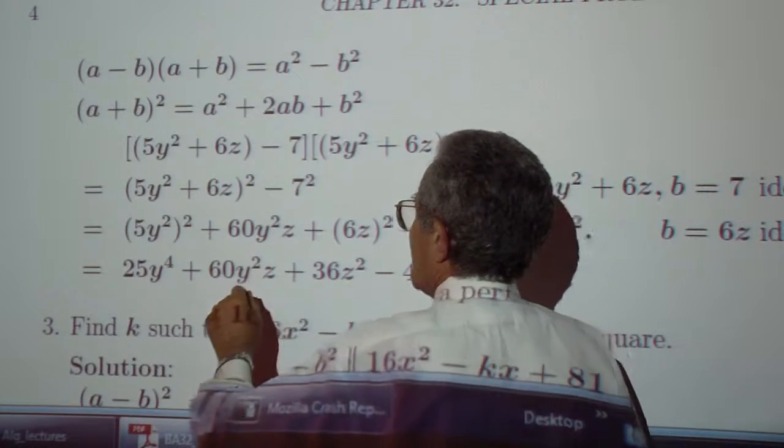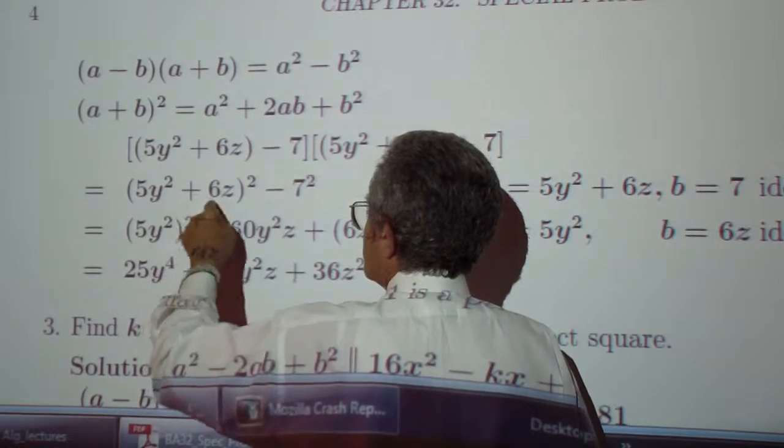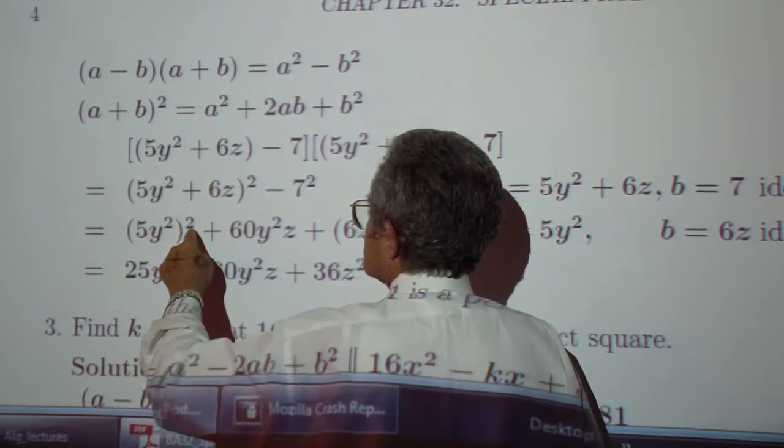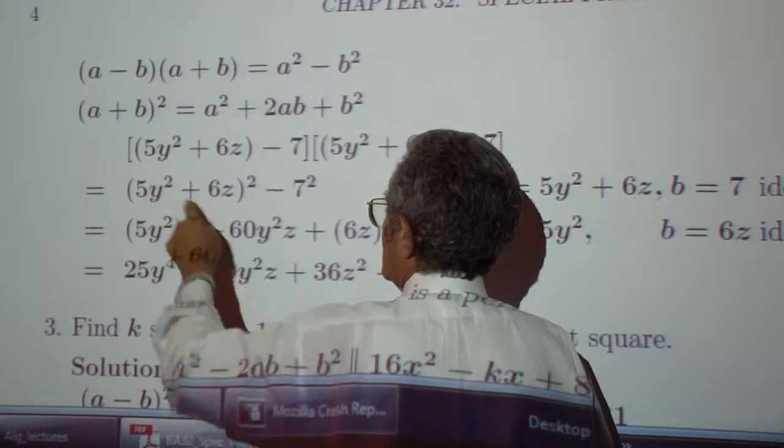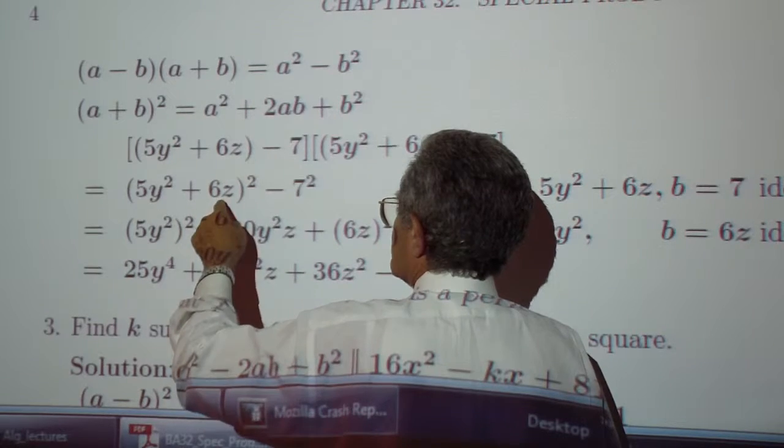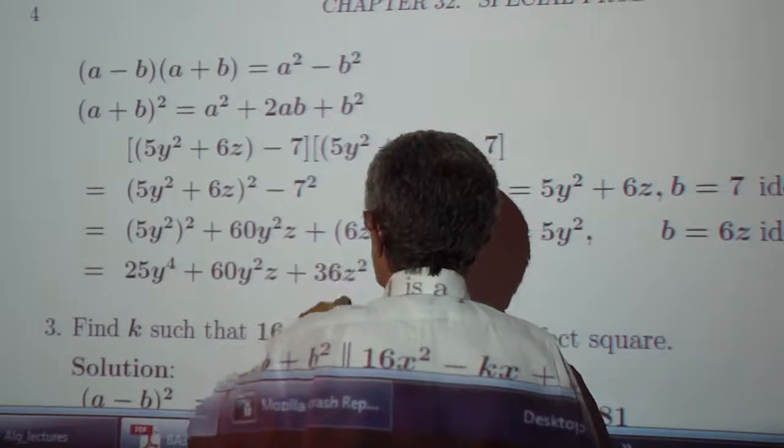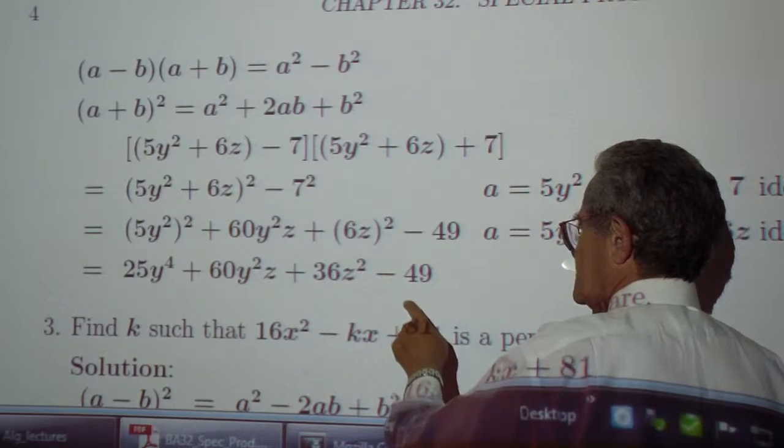This you can expand, this is another generic a plus b quantity squared. So a squared plus the double product, 2 times 5, 10 times 6, 60, y squared times z, plus b squared, 6z quantity squared. And then you just subtract 49.